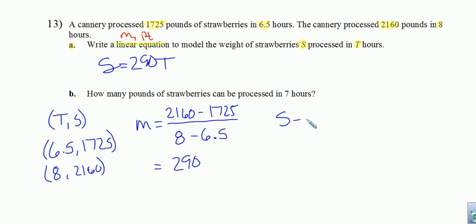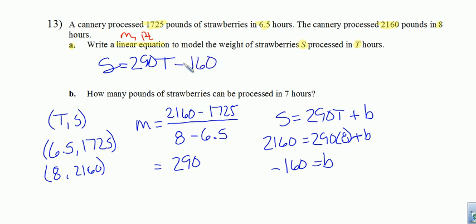So let's copy that down here. S equals 290 T plus some unknown Y-intercept or B value. Let's go ahead and plug in a point for S and T. Let's use 8 and 2160. Then we don't have to deal with decimals. So S, 2160 is an S value, equals 290 times 8 plus B. We're going to have to take 2160 and minus 290 times 8 from it. The result there is negative 160. So B is negative 160. So this would have a B value of negative 160. That is done. S equals 290 T minus 160.